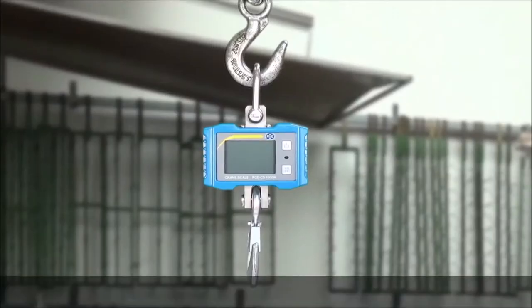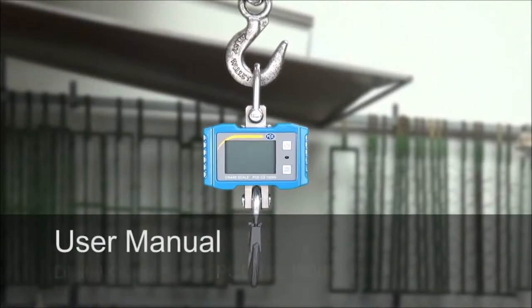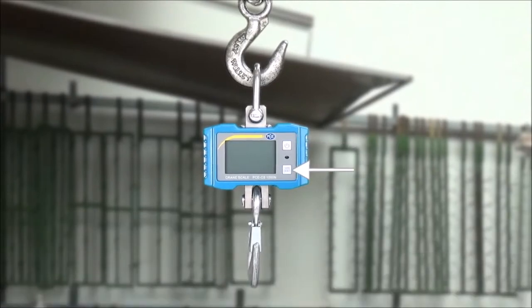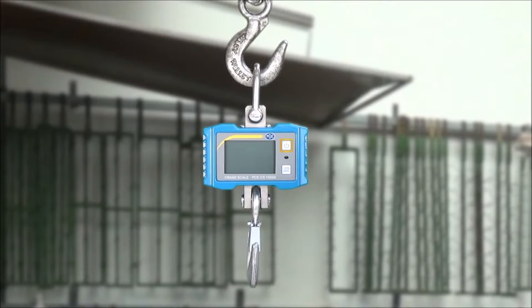The Crane Scale has two buttons. First of all in the top area the button to turn on and off, as well as in the bottom area the button for the tare or zeroing. To turn the scale on, use the top button.